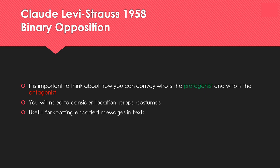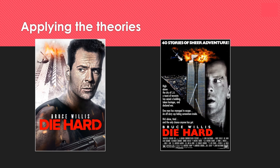One particular film we can apply this to is Die Hard. It's getting on a bit now but it's absolutely brilliant and worth watching. You can apply both narrative theories to it, and in fact you can apply binary opposition to almost everything. Most films also tend to follow the five-step narrative.